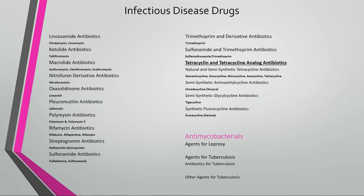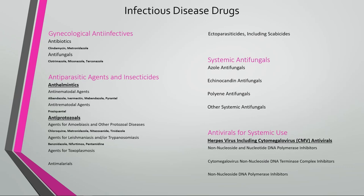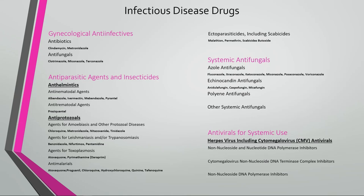For antimycobacterials, we have agents for leprosy and agents for tuberculosis including antibiotics and other agents. Gynecological anti-infectives include antibiotics and antifungals. For antiparasitic agents and insecticides, there are anthelmintics including antinematodal and antitrematodal agents. For antiprotozoals, we have agents for amebiasis and other protozoal diseases, agents for leishmaniasis or trypanosomiasis, agents for toxoplasmosis, and antimalarials. There are also ectoparasiticides including scabicides. For systemic antifungals, we have azole antifungals, echinocandin antifungals, polyene antifungals, and other systemic antifungals.